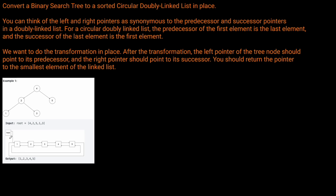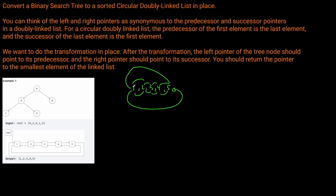Before we jump into how to solve this problem the way they ask us to, if you get this question in an interview and you don't know how to do it in place, your interviewer might not ask you to do it in place. So the simplest way is just to do an in-order traversal of our binary search tree, which will always give you the elements in sorted order. You'd get the list back as 1, 2, 3, 4, 5, and then use a for loop to link each one to its predecessor. That way you could do it simply without worrying about doing it in place. You're still going to achieve O(N) runtime, and you're going to need O(N) space for storing those nodes.